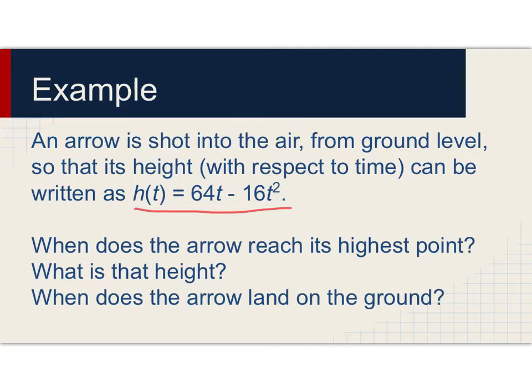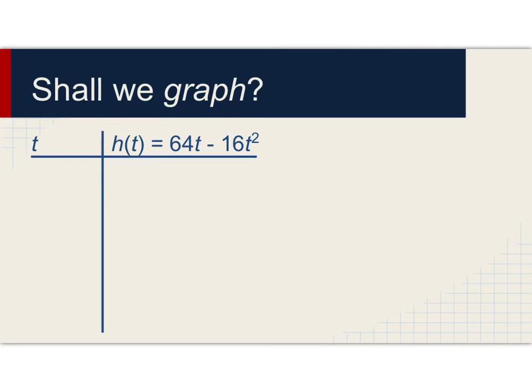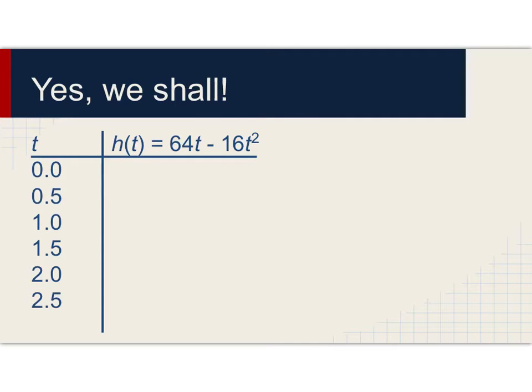Well, if all else fails, we can plot some points and see what happens. Shall we graph? We shall. Let's take values of t that are every half second: at zero seconds, half a second, one second, one and a half, two, two and a half seconds. We're going to need to expand this table out by a few more rows.